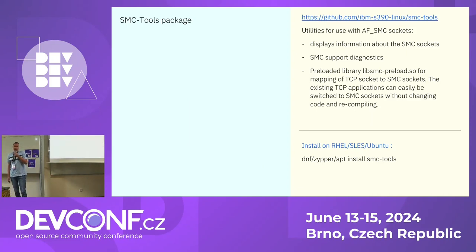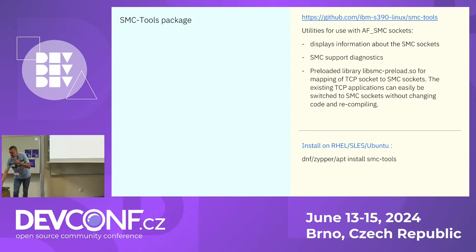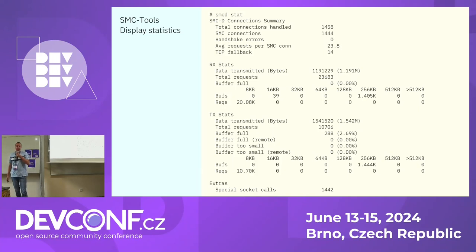The SMC tools package helps you manage connections that use SMC protocol — you can obtain it on GitHub or install it from distros. The most important commands include: SMCD stat, which displays statistics about SMC protocols such as total connections, number of SMC connections, number of TCP fallbacks, and send/receive buffer information including buffer sizes and buffer full errors.